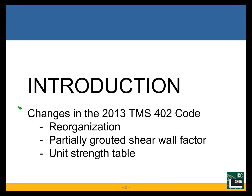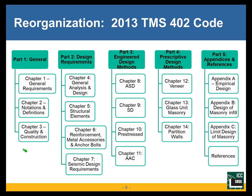We'll start with changes in the 2013 code. The three big changes are reorganization, the partially grouted shear wall factor, and the unit strength table. Going from 2011 to 2013, we did a reorganization — not as dramatic as what ACI did with ACI 318. All of the first seven chapters in 2013 used to be chapter 1 in the 2011 code. Chapter 1 was just growing and growing, so we split it into seven different chapters.